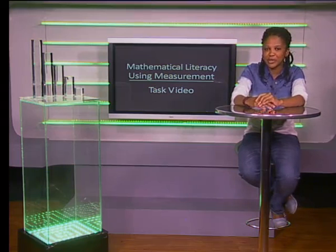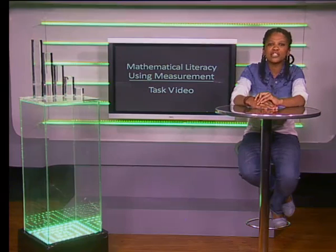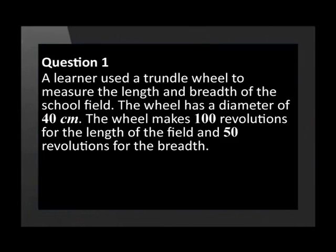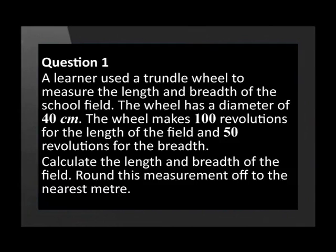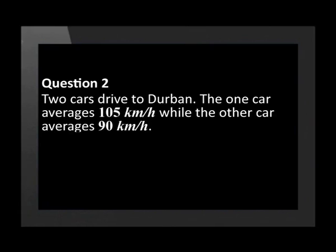Question one: A learner used a trundle wheel to measure the length and breadth of the school field. The wheel has a diameter of 40 centimeters. The wheel makes 100 revolutions for the length of the field and 50 revolutions for the breadth. Calculate the length and breadth of the field, rounded off to the nearest meter.